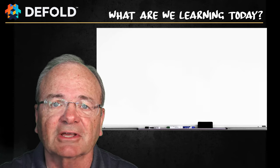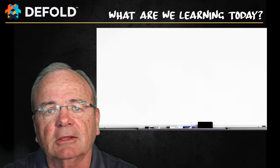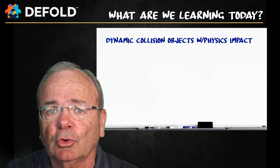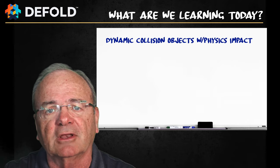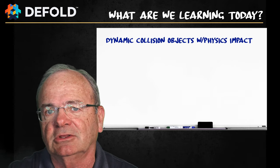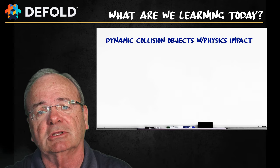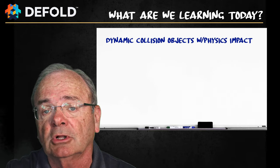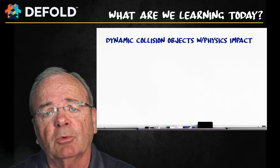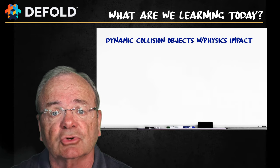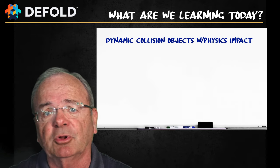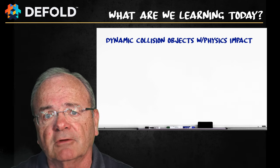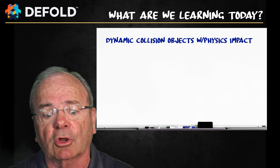Let's step to the whiteboard. What are we going to learn today? The real objective is the physics engine, and the tool we're going to use to invoke that is something called the dynamic collision object. We already did the kinematic collision object in the drag-and-drop tutorial, where you controlled all the movement with your Lua script. With the dynamic collision object, it's the physics engine that controls movement — whether gravity pulling it down, bounce effect, or the forces of friction.